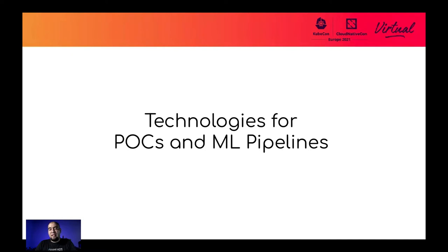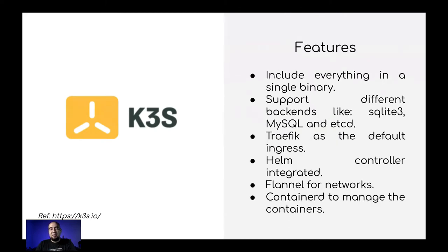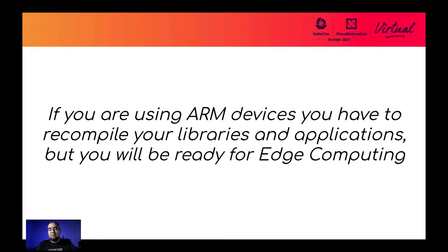There are some technologies for POCs and machine learning pipelines. K3S is a certified Kubernetes distribution that supports ARM architecture and is ready for IoT and edge computing. It also has support for Intel architecture. Amazingly, K3S includes all the components of a regular Kubernetes cluster in a single binary. It has multiple backends like MySQL, includes ingress, Helm support, network support, and container runtime. If you are using ARM architecture devices, you may need to recompile your libraries or applications to support that architecture.